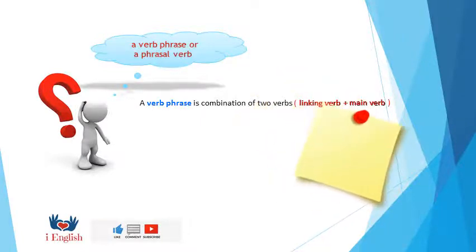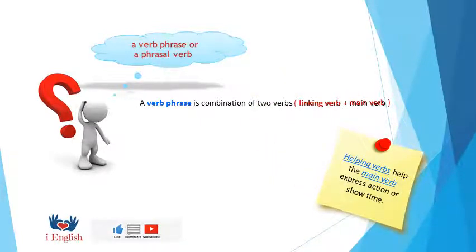Please notice, helping verbs help the main verb express an action or show time. Here is an example: he has planted a tree. He is a subject, has is helping verb, planted is an action verb or main verb, a tree is an object. Has planted all together make us verb phrase or phrase of verb.